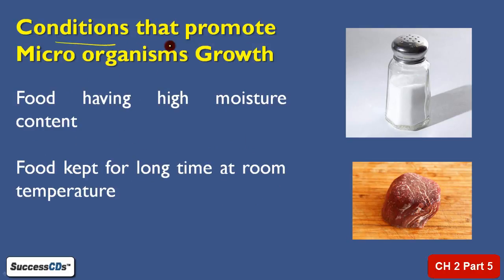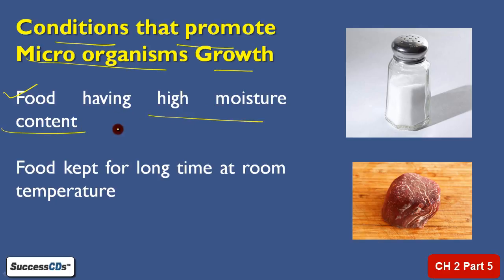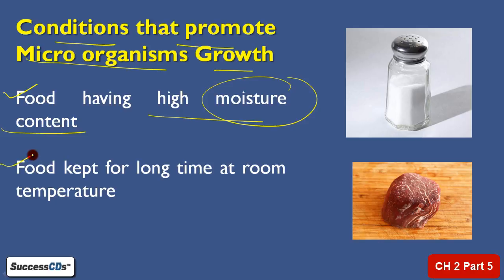Now we are going to see the conditions that actually promote Micro-Organism growth — what conditions cause micro-organisms to grow quickly and in large numbers. The first is food which has a high moisture content — that actually enhances the growth of micro-organisms. Wherever there is high moisture, micro-organism growth will also happen faster. Also, food kept for a long time at room temperature is another condition that promotes the growth of micro-organisms.